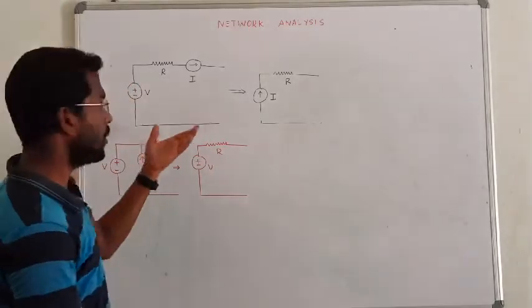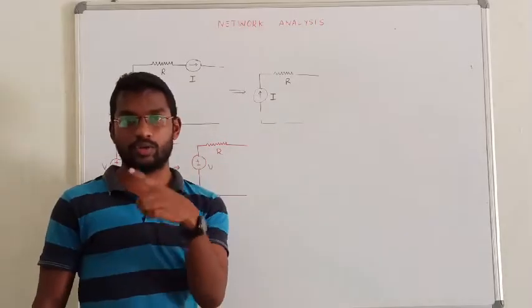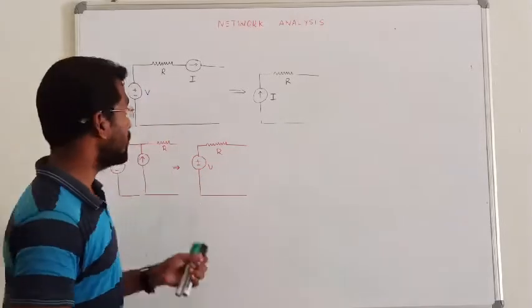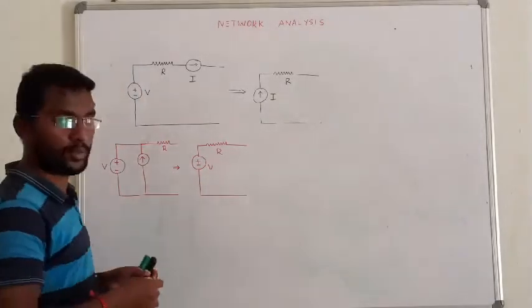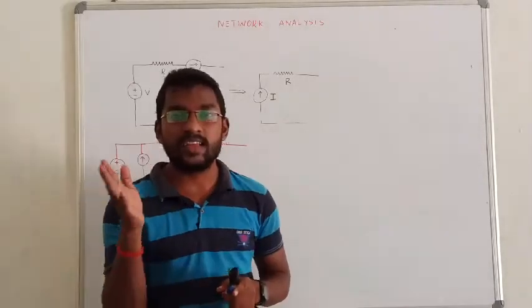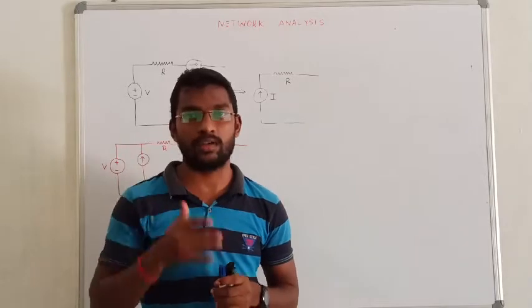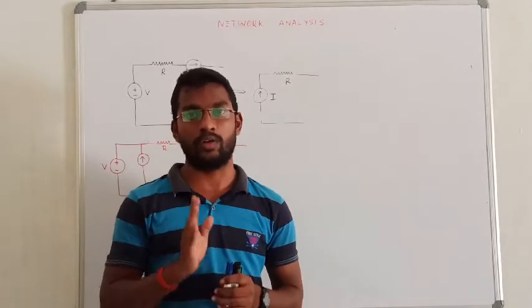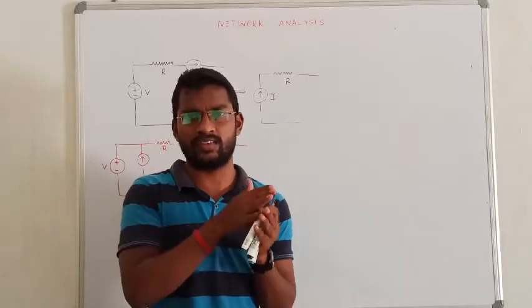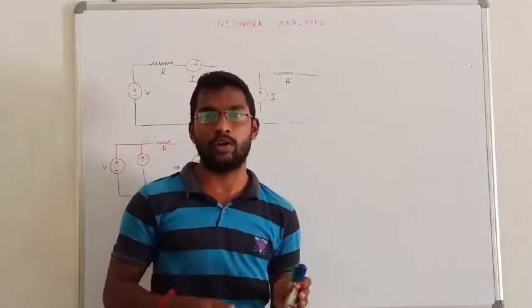So, what is the conclusion? In a series circuit, the current value is always the same at any point. The voltage value changes.